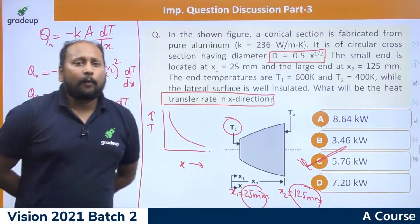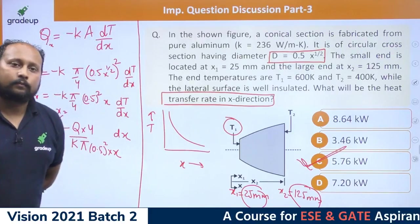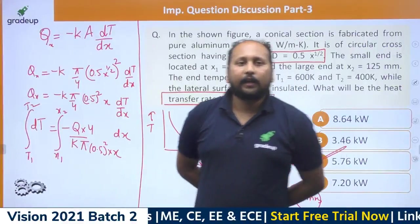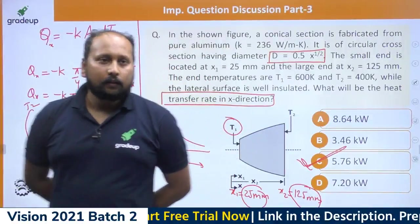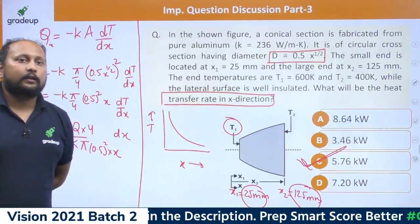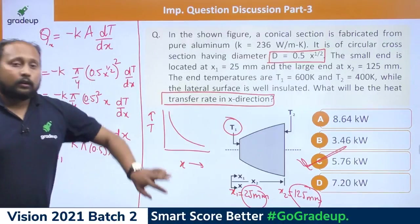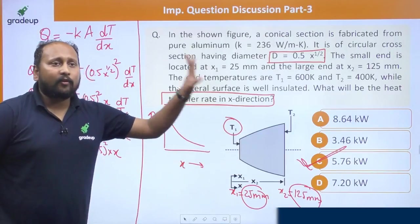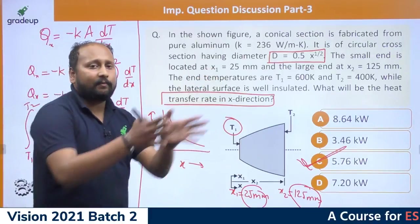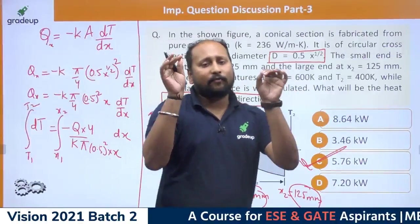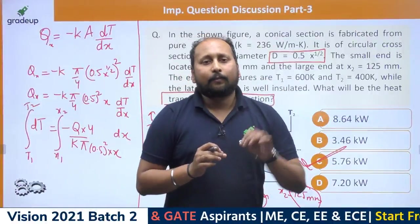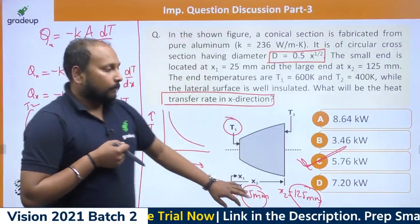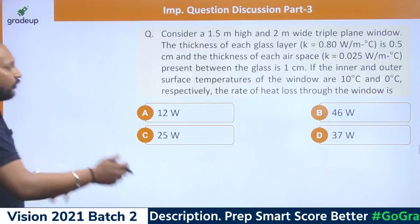Option C is the correct answer — approximately 5.76 kW. The key takeaway: whenever you have a variable cross-section, approach it using the basic concept of Fourier's law of heat conduction and integrate. Let us move to the next question.